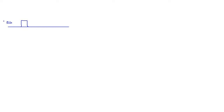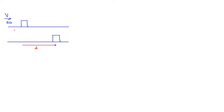In this problem, we have a block and a bullet coming towards the block. The bullet gets embedded in the block. The block is going to move some distance d along a rough surface — that's why the block eventually stops.